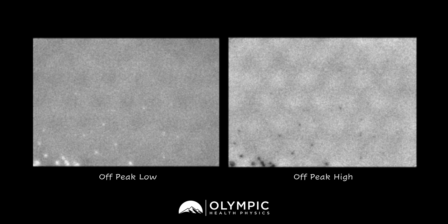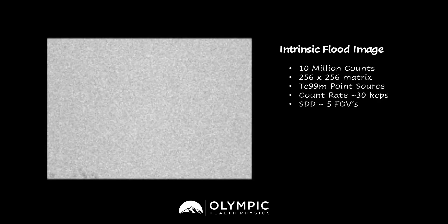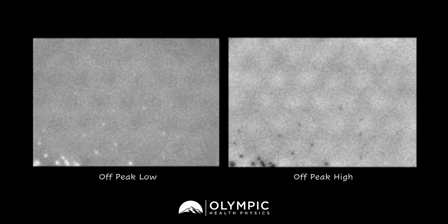Off-peak images also allow us to look at crystal hydration on the crystal itself. Here are the off-peak images — we have off-peak low and off-peak high. If you've guessed crystal hydration, then you would be accurate. This camera was displaying some crystal hydration that we saw with the nondescript non-uniformities, and further analysis with those off-peak images was able to confirm crystal hydration.